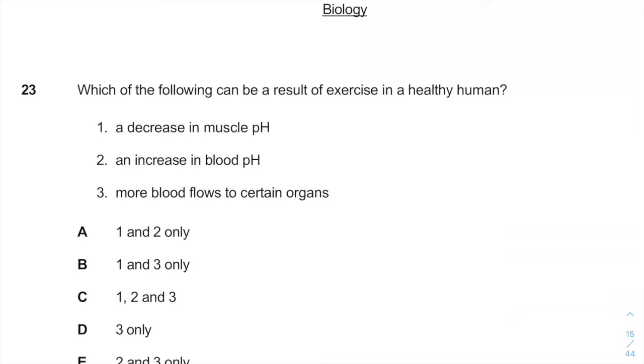Which of the following can be a result of exercise in a healthy human? During exercises, muscles need a lot of energy and therefore respire a lot and release plenty of carbon dioxide. Carbon dioxide, combined with water which you can find in the blood, is converted into bicarbonate.